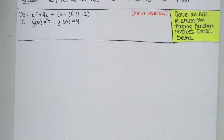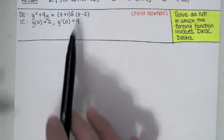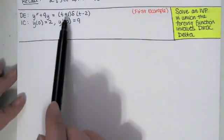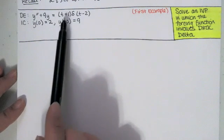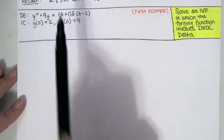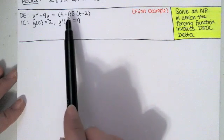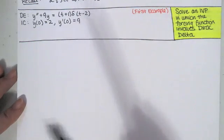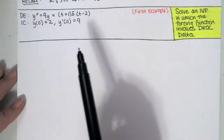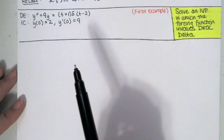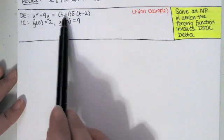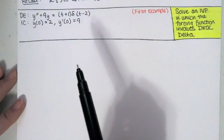In this video we solve an initial value problem in which the forcing function — that is the function on the right hand side of the differential equation, after we have moved all the terms involving the independent variable only to the right hand side — involves the Dirac delta. We're going to use some of the results from the last video for the Laplace transform of a function of t times a Dirac delta function.